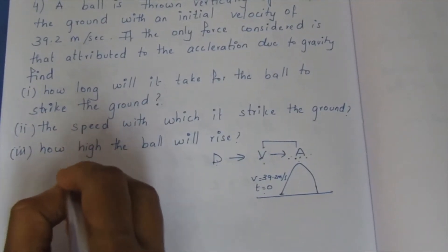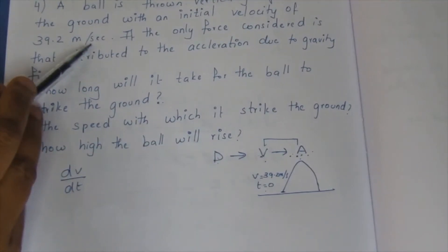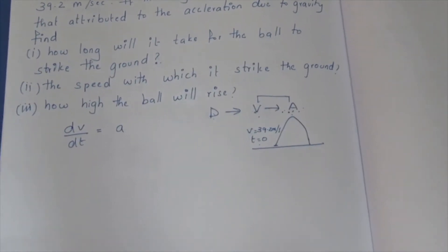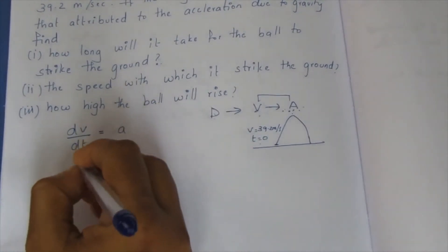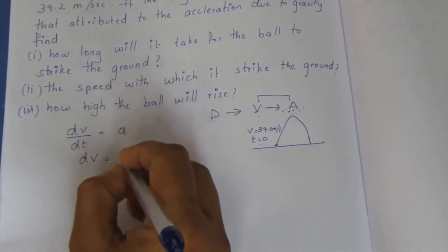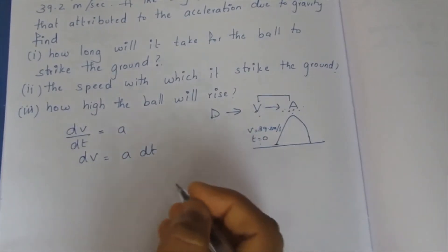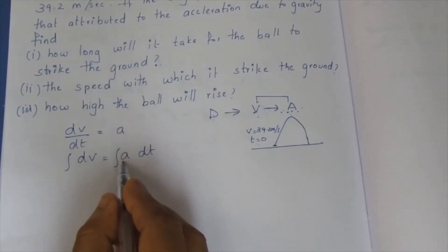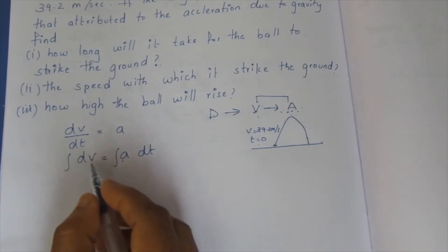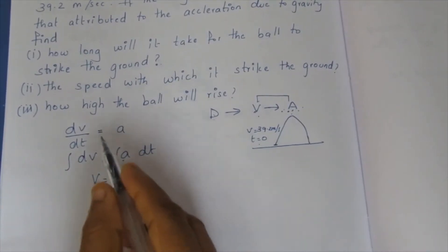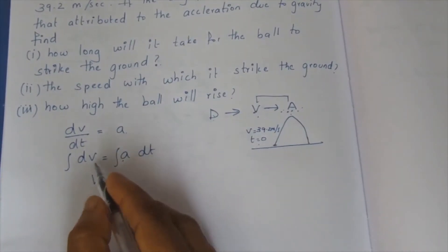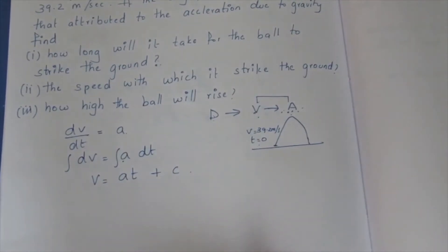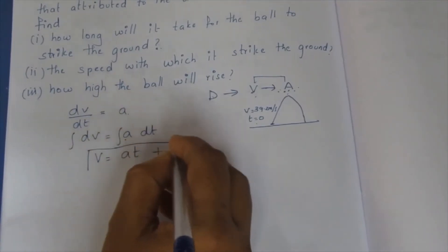Velocity is obtained by differentiation with respect to time. So dV divided by dT equals acceleration, denoted as 'a'. Therefore dV equals a·dT. Integrating both sides, V equals a·T plus C, where C is the constant of integration. So the equation is V equals AT plus C.